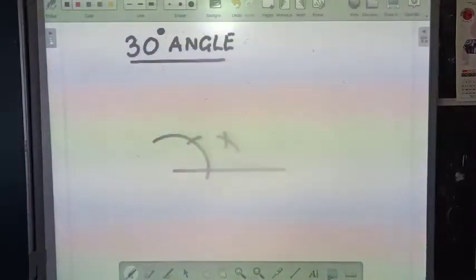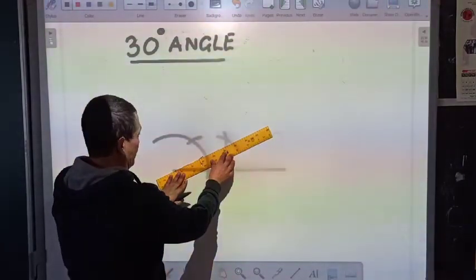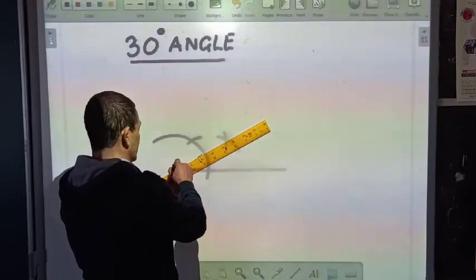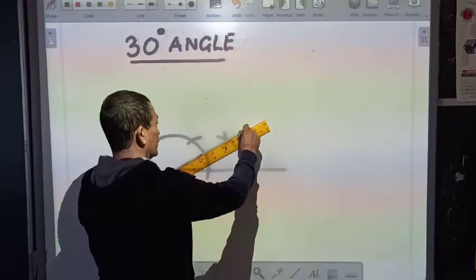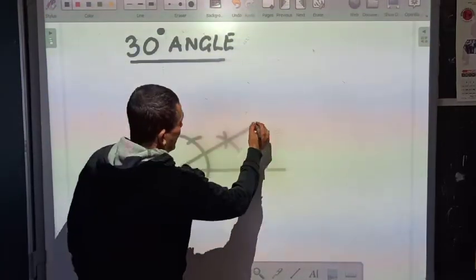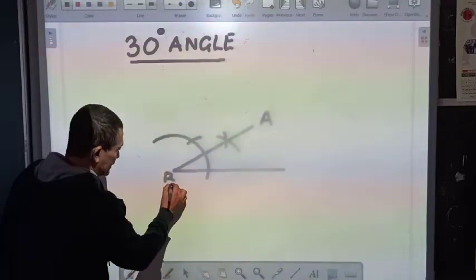So if I join these lines, if I join these two points here, then I will be getting a 30 degree angle. So this angle here, angle A, B, C.